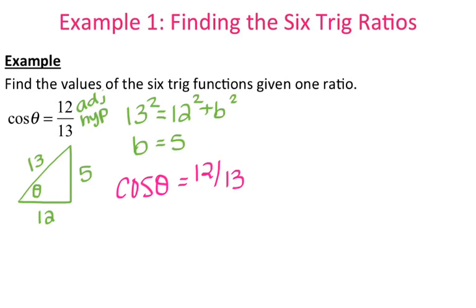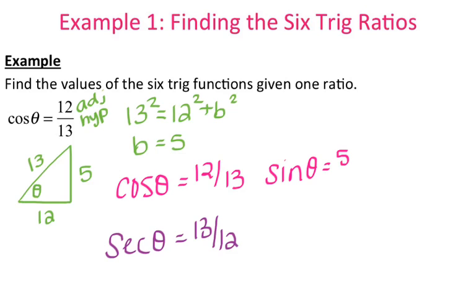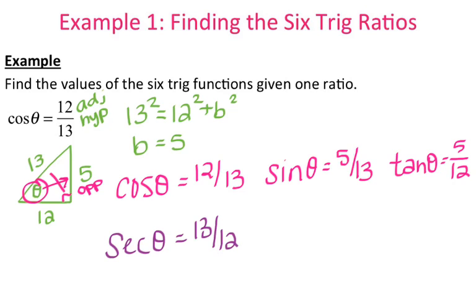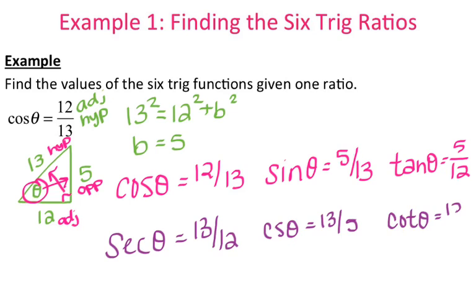If I know cosine, that means I also know secant, because they are reciprocals of each other. So let me find the other 4. Cosine is 12/13. Sine is opposite over hypotenuse, which is going to be 5/13. And tangent is opposite over adjacent, so that's 5/12. Since I know that sine is 5/13, that means cosecant is 13/5, and cotangent is going to be 12/5.